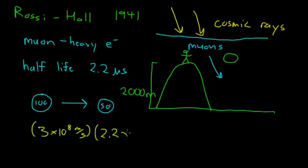2.2 times 10 to the negative 6 seconds, then that means that in about every 660 meters, you can multiply these two together, that means they'll travel 660 meters before half of them decay. And this is the classical picture.